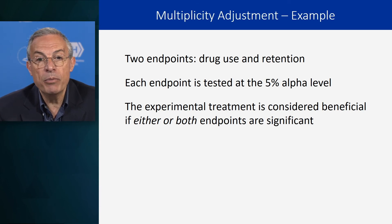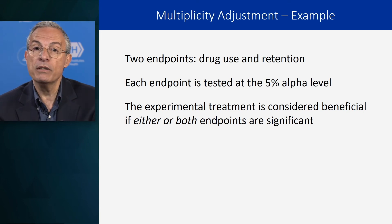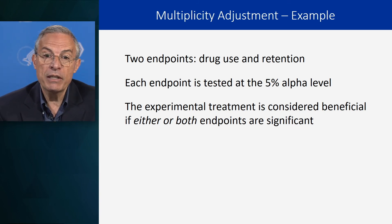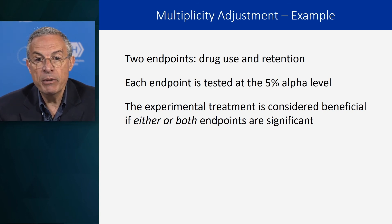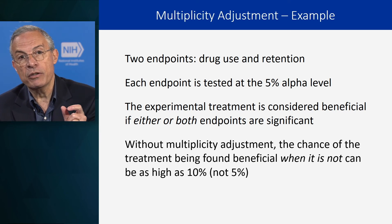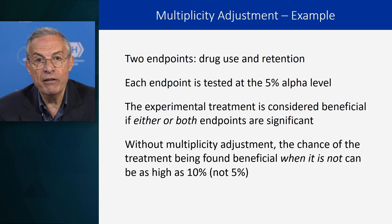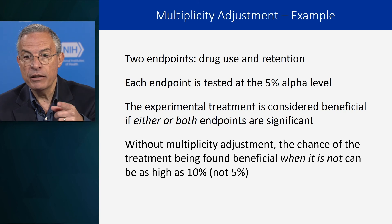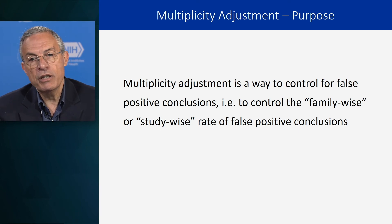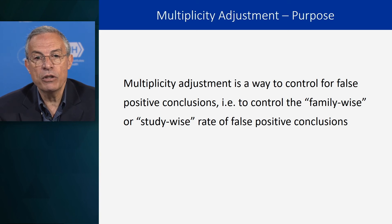Here's an example. If you have two endpoints — drug use and retention — both important in illicit drug treatment, and each endpoint is tested at the 5% alpha level, and the experimental treatment is considered beneficial if either or both endpoints are significant, then without multiplicity adjustment the chance of the treatment being found beneficial when it is not — type 1 error — can be as high as 10%, not 5%, because either one of those two endpoints has to be significant. Multiplicity adjustment is a way to control for false positive conclusions and to control the family-wise or study-wise rate of false positive conclusions.